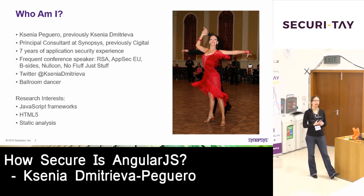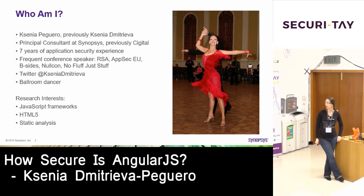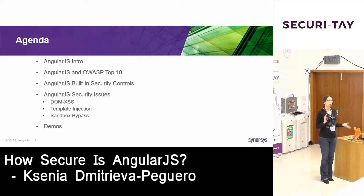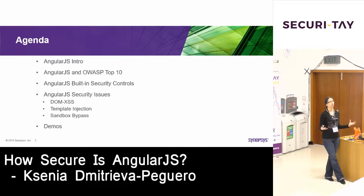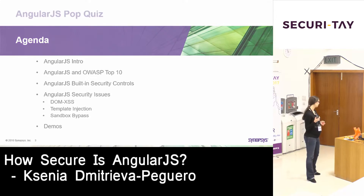Today we will be talking about AngularJS because in the past couple of years I was really interested in JavaScript technologies, and one of the most popular client-side frameworks is AngularJS. I was looking at the vulnerabilities — how secure it is, what can go wrong when you're using Angular. I'll give a quick intro and then we'll talk about how Angular relates to OWASP top 10, the security controls built in by default, how to enable or disable them, and then the security issues still present in the framework. I'll also show demos.